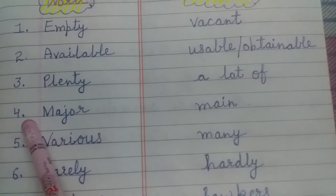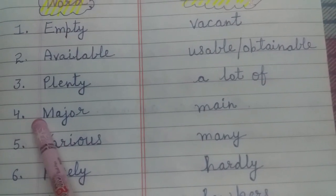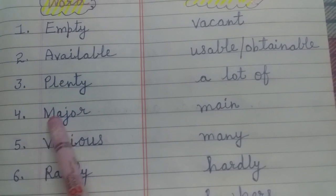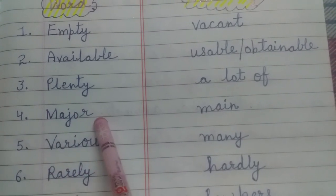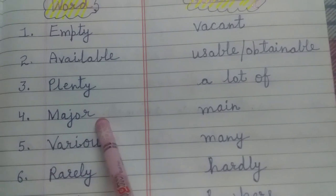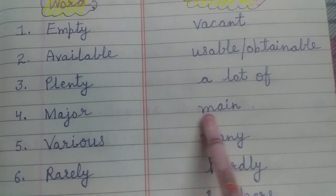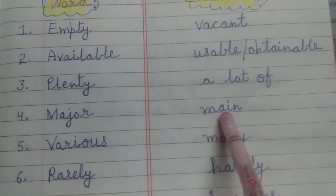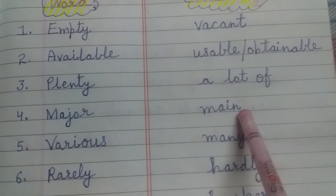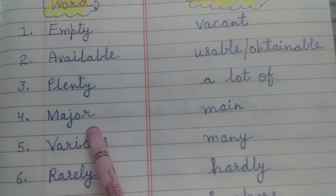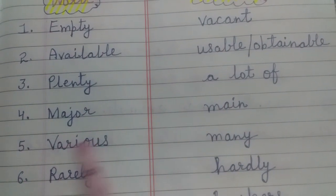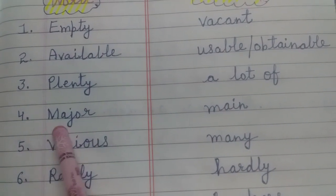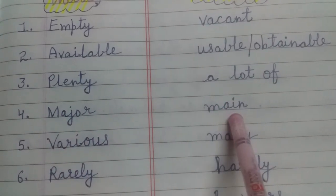Let's read our fourth word: measure. M-A-J-O-R — measure. Meaning: M-A-I-N — main. Measure का meaning क्या होता है? Main. Measure — main.